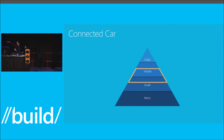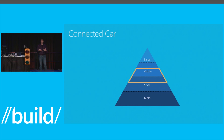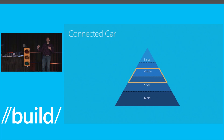Connected car kind of fits in the space between small devices and mobile devices. In some ways it looks kind of like a phone or a tablet. In other ways, it's kind of this low-level thing that controls the flow of data that travels across the CAN bus in the car, which is the internal bus on which all the data exchange on a vehicle happens.